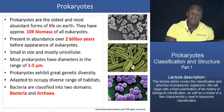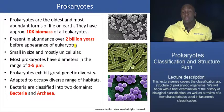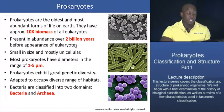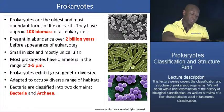Prokaryotes in general are very small cells — mostly unicellular, with a diameter of about one to five micrometers. You can contrast that to eukaryotic cells, which have diameters of about ten to a hundred micrometers.